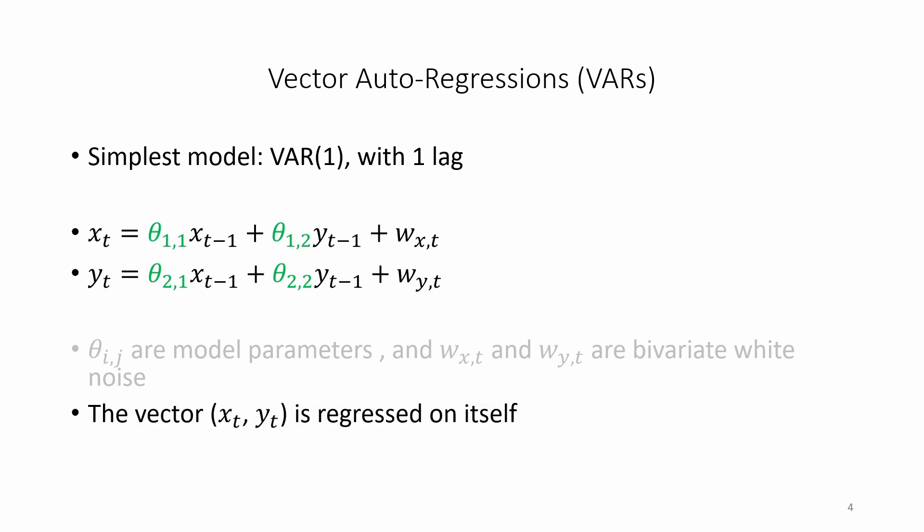Hence we can see that the vector xt yt is regressed on itself. That's why we call it a vector autoregression. Note that there is not just one dependent variable. In this case there are two dependent variables x on the first row and y on the second row.